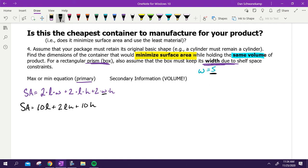We wrote our surface area equation. What's the problem with minimizing this equation? How many variables do I have? I have two variables—L and H. That's a problem. I can't have two variables, so I need to have a second equation to substitute in.